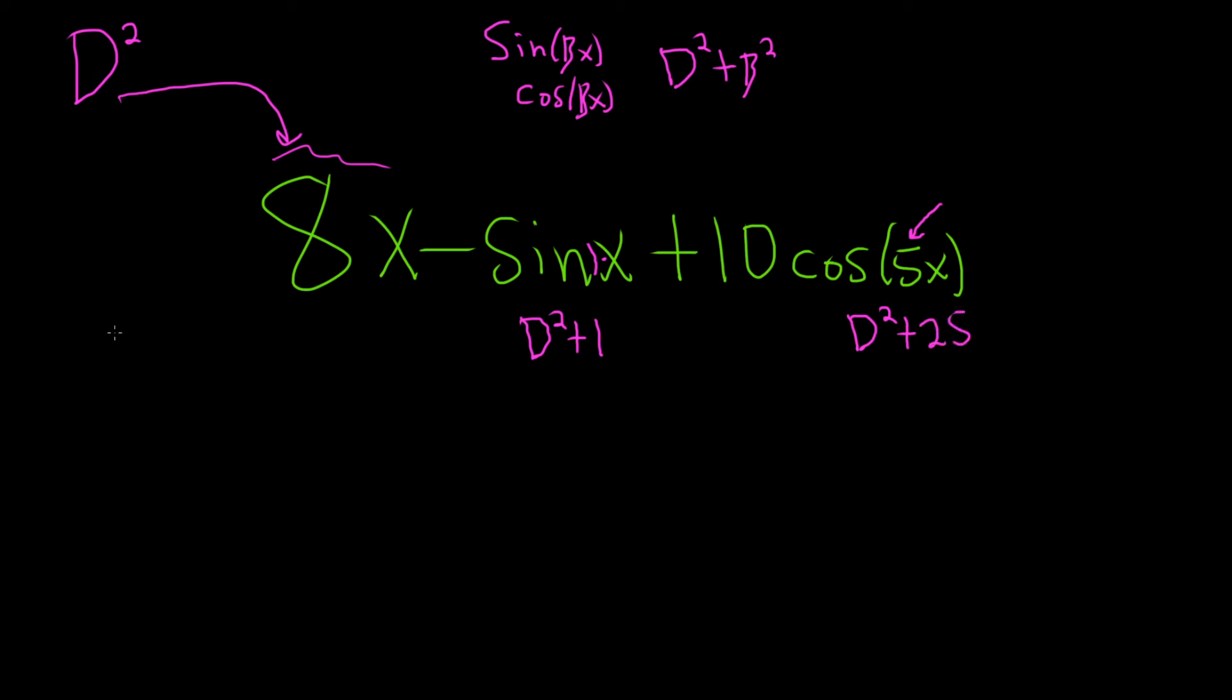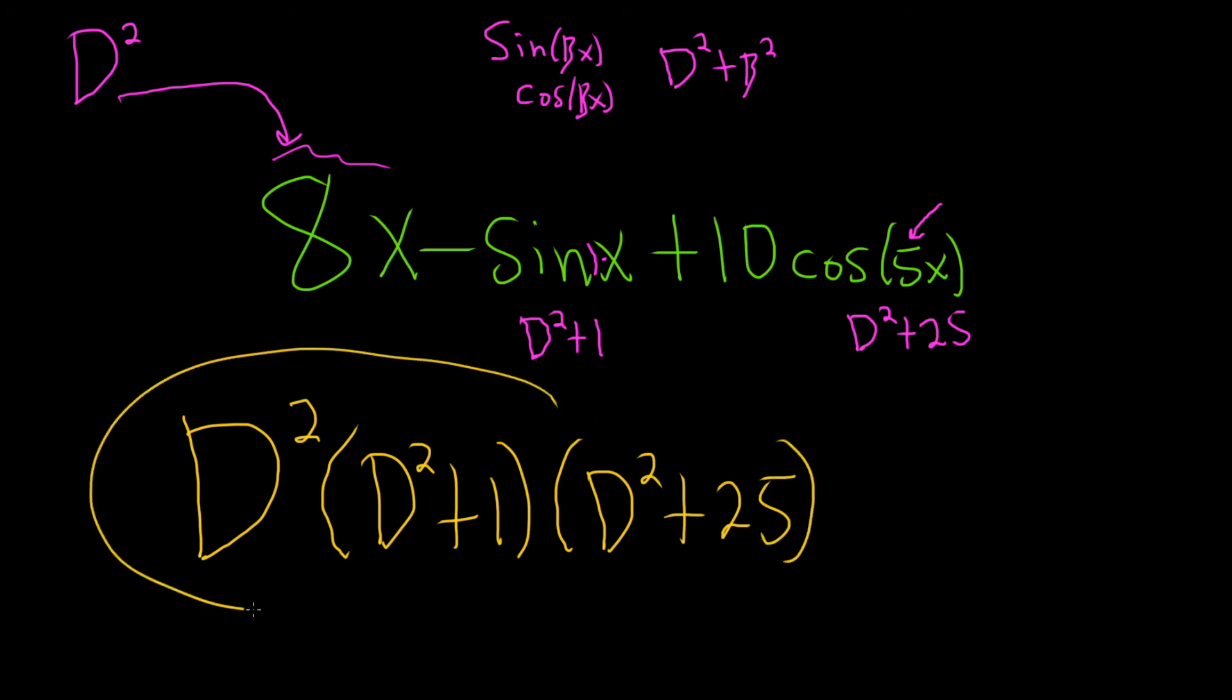So in order to annihilate everything, all we need is d squared times d squared plus 1 times d squared plus 25. And this would be the linear differential operator that annihilates this function.